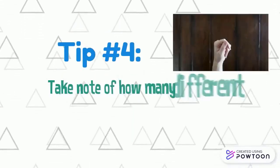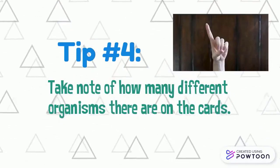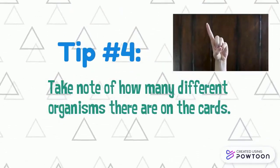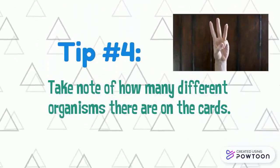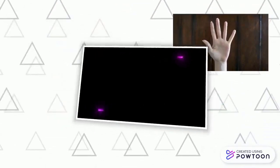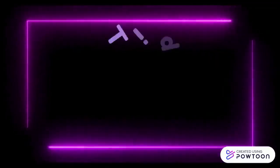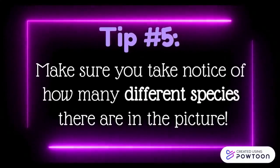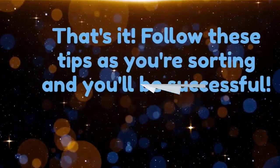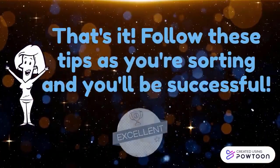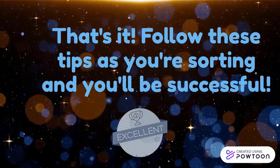Tip four: don't forget to take note of how many organisms there are on the card. That's important for all categories except abiotic and ecosystem. Tip five: also make sure you take note of how many different species there are on the card — that's the difference between population and community. Follow these tips as you're sorting your cards and you're sure to be successful.